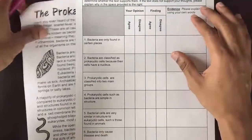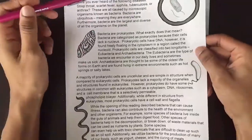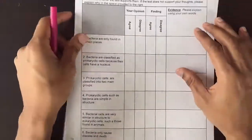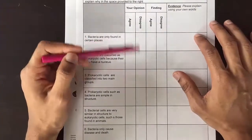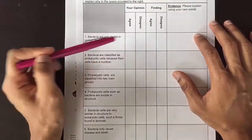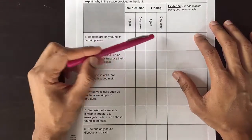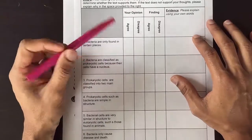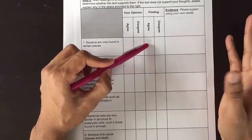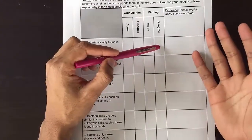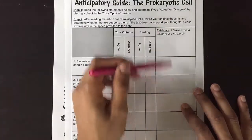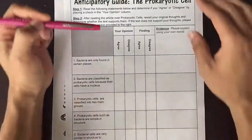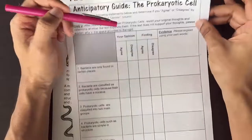Once they are finished, you give them a reading, they read through it, then they go back and indicate whether the reading agreed or disagreed with their original opinion. If it agreed, they don't have to do anything. However, if the reading disagreed with their opinion, they need to come to this little column right here and provide evidence in their own words to explain why the reading disagreed with them.